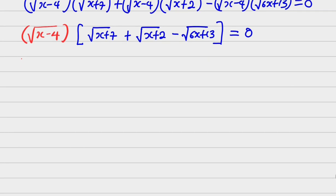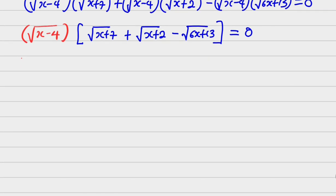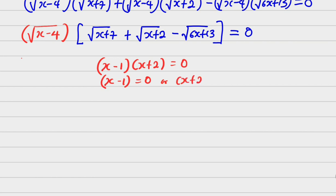Everything equals zero. Now recall: once you factorize a quadratic equation, for example x minus 1 into x plus 2 equals zero, you say either x minus 1 equals zero, or x plus 2 equals zero. That is exactly the conclusion I'm going to use here.